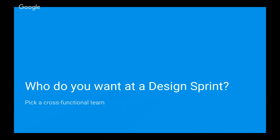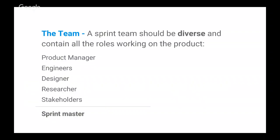The composition of the team you put in a design sprint is really important. You want a team that's diverse and contains all the roles working on the product — PM, engineer, designer, researcher, and maybe some stakeholders. Depending on your company or product, you might have people like clinicians or logisticians. Most importantly, there's a person called the sprint master, who is actually independent from the team and is there just to run the sprint process — the person with the plan who keeps everybody making progress.